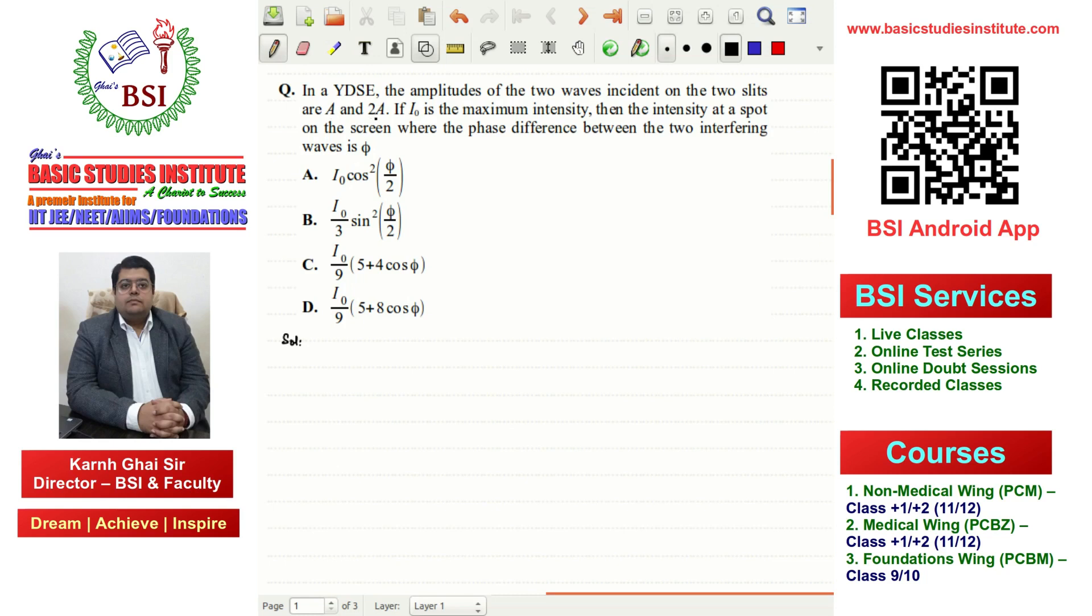If I0 is the maximum intensity, then we need to find the intensity at a spot on the screen where the phase difference between the two interfering waves is phi.